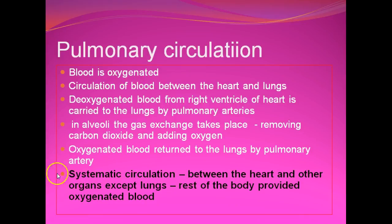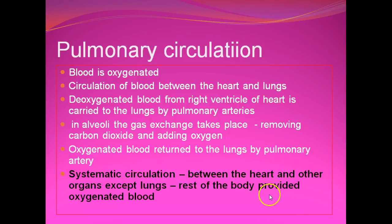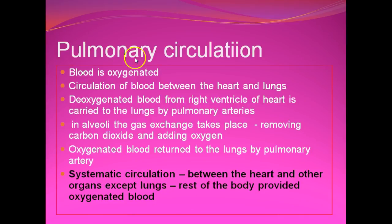There is another type of circulation called systematic circulation, which is between the heart and other organs except the lungs. In systematic circulation, the rest of the body is provided oxygenated blood, so oxygen reaches the tissues for release of energy. In pulmonary circulation, the blood is oxygenated — it is a circulation of blood between the heart and the lungs.